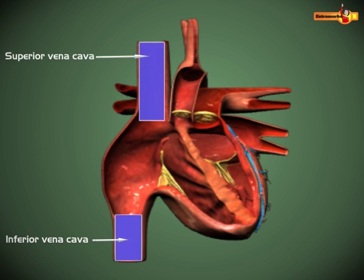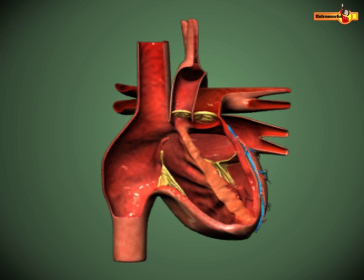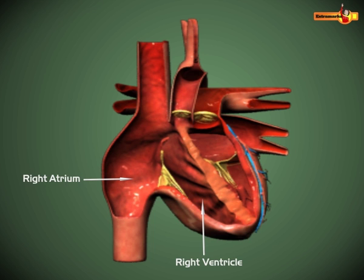Internally, all four chambers are lined by a smooth membranous lining called the endocardium. Two major veins carrying deoxygenated blood from the body enter the right auricle or atrium. The right atrium communicates with the right ventricle through an opening in the atrioventricular septum.